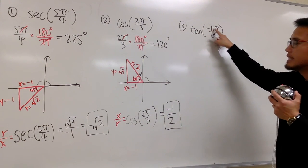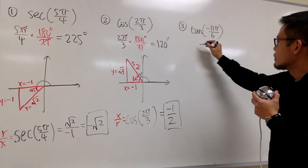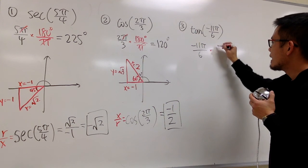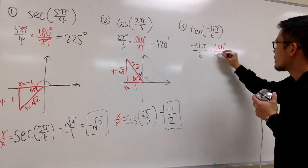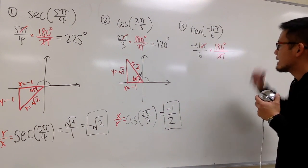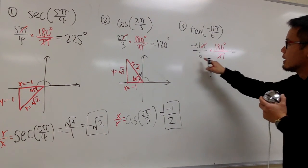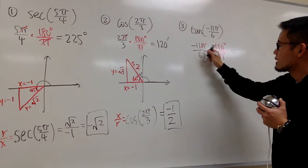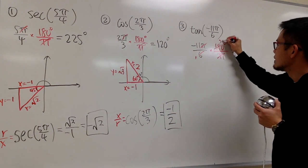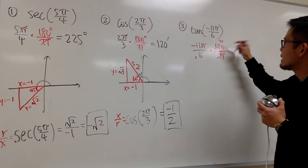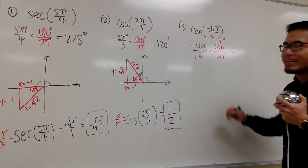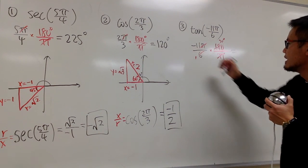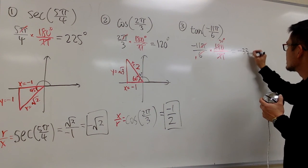Last one: tangent of negative 11π/6. Let's go ahead — negative 11π/6 multiplied by 180 degrees over π. The π cancels. You can reduce 6 and 180: this becomes 1 and 30. So 30 degrees times 11 is 330, but it's negative. Altogether it's negative 330 degrees.